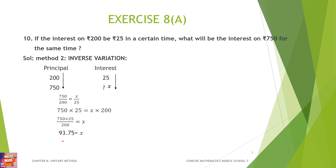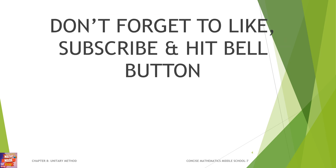That is 93 rupees 75 paise. So, the interest on Rs. 750 is 93 rupees 75 paise. I hope you like this video. Don't forget to like, subscribe, comment, and hit the bell button. Share this video with your friends, and check the description box for more problems on unitary method. Thanks for watching.